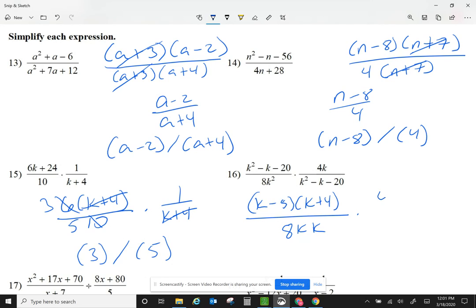The second fraction, I have 4k over k minus 5, k plus 4. Cancel the k plus 4, k plus 5, 1k with 1k. The 4 and the 8 becomes 1 and 2.